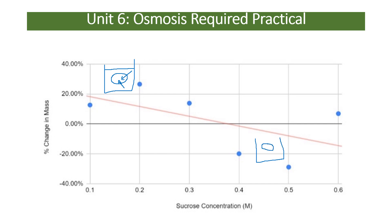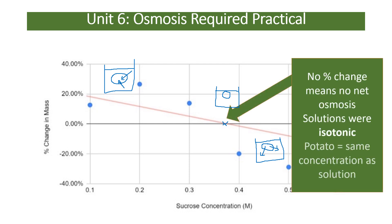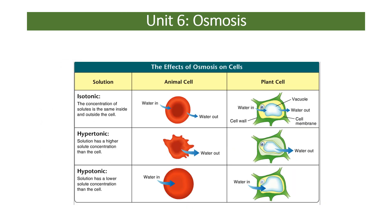If the solution has lots of sugar dissolved in it, it may have a lower water potential than the potato, in which case water in the potato naturally moves out via osmosis, making the mass go down. The exact point where the graph crosses zero — no change in mass — is where the concentration of water is exactly the same inside and outside the potato, so there's no overall movement in or out. We call that solution isotonic.